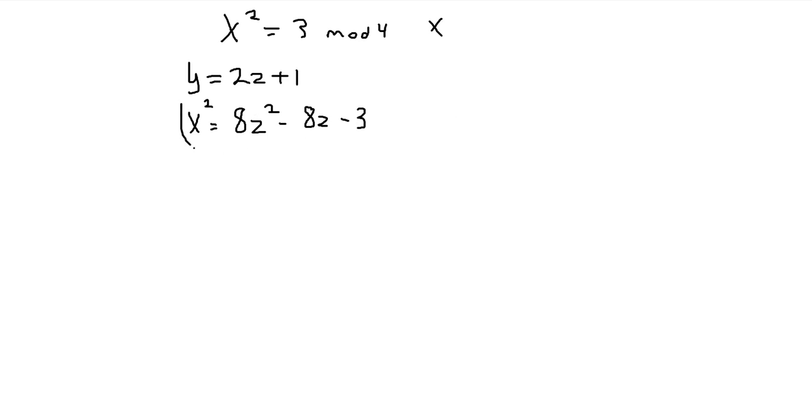And now here we can take both sides of the equation mod 8. Because 8z squared minus 8z, that's just going to go to 0. And negative 3, we know that negative 3 is congruent to 5.